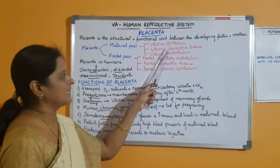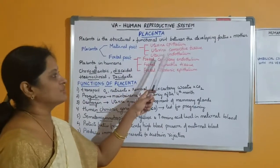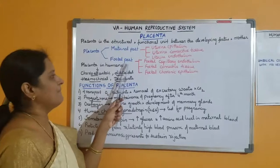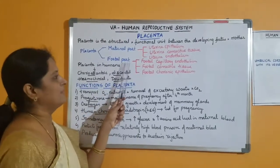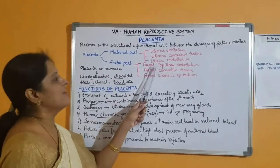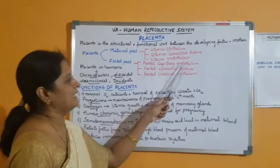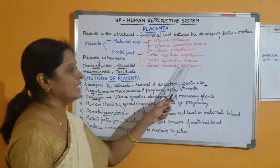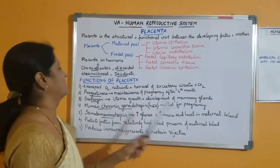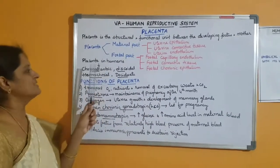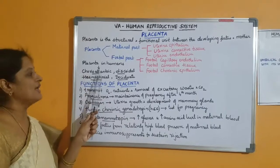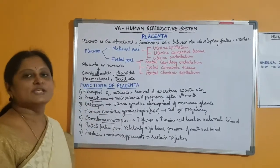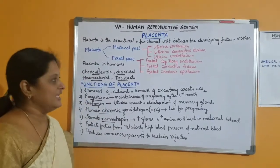The three layers of the maternal part are: uterine epithelium, uterine connective tissue, and uterine endothelium. The fetal part is derived from the fetal membranes and it also has three layers: fetal capillary endothelium, fetal connective tissue, and fetal chorionic epithelium. The placenta in humans is called chorioallantoic because the chorion and allantois fuse with each other.